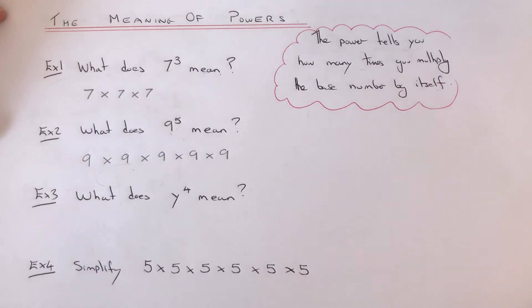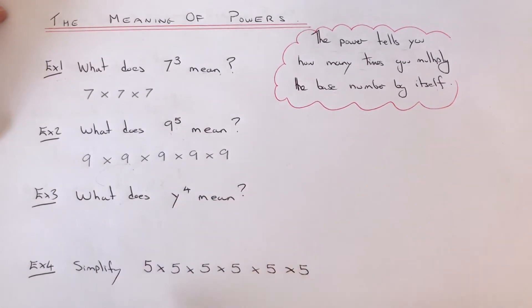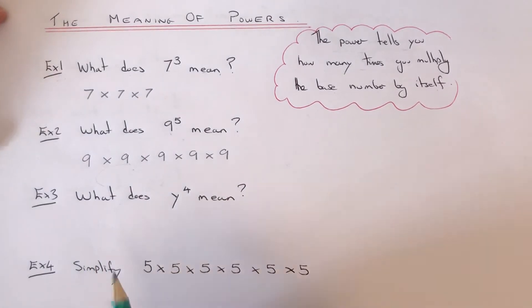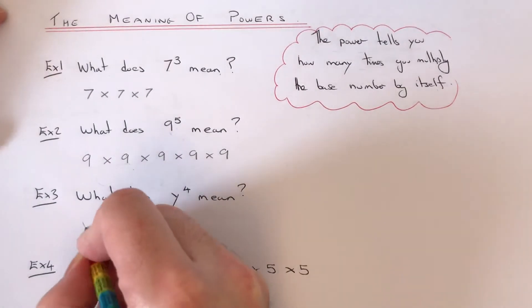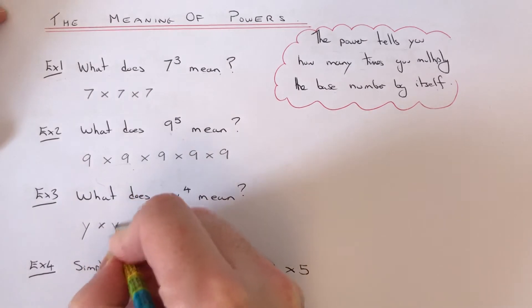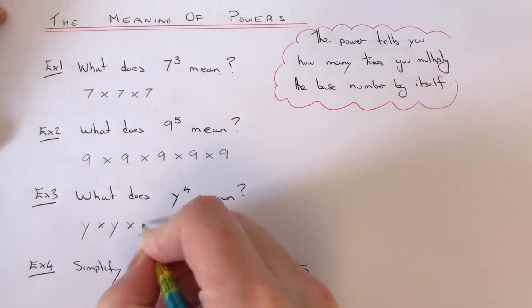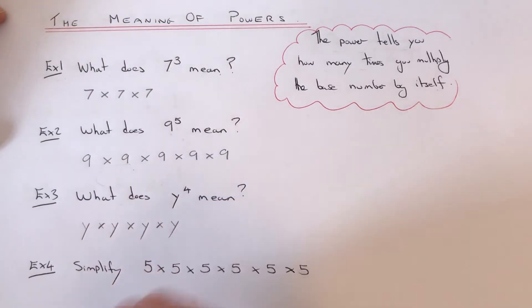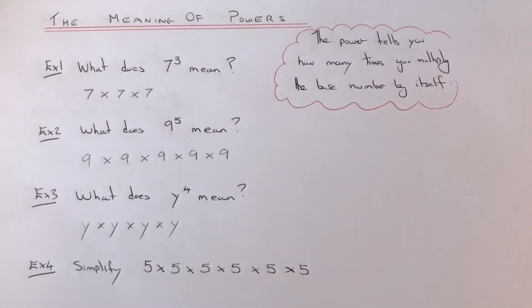Let's have a look at example three. What does y to the power of four mean? The power is four, so we need to multiply y by itself four times.